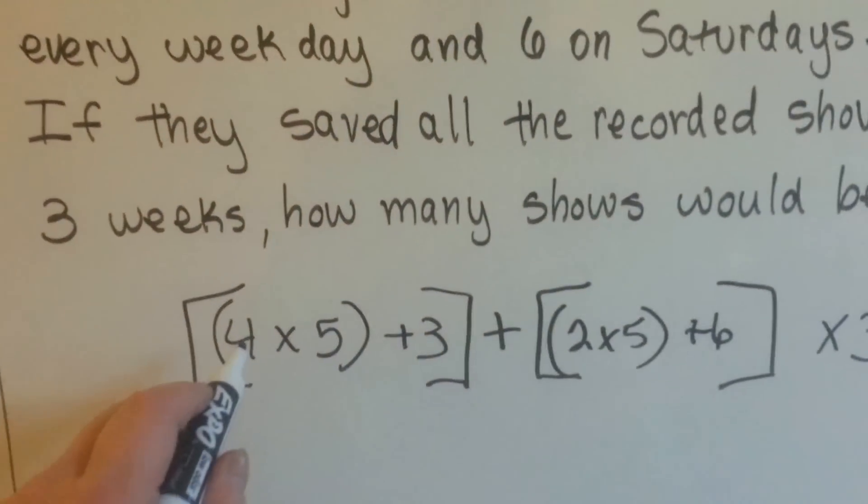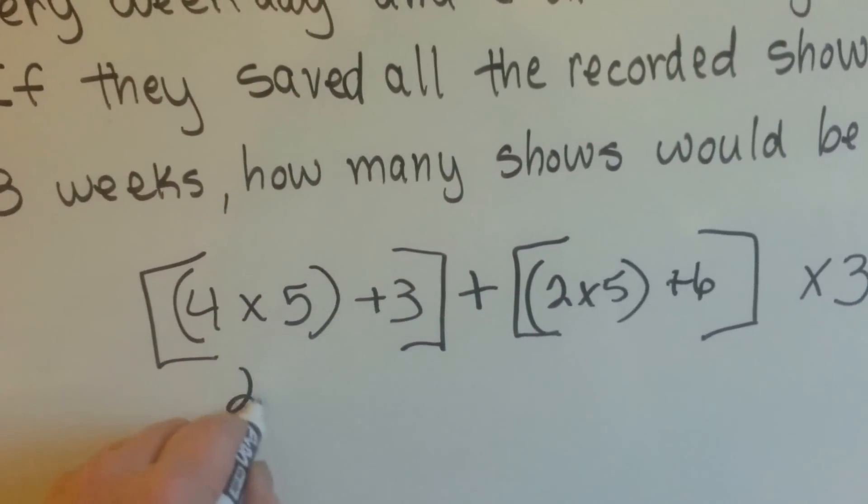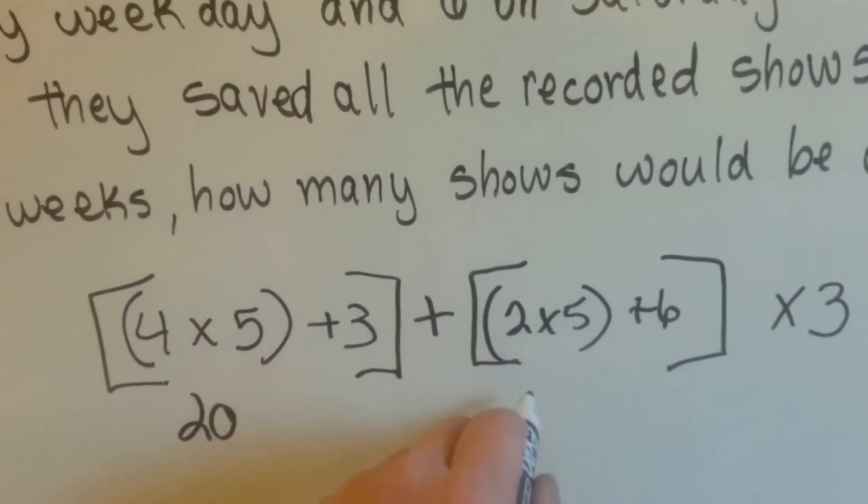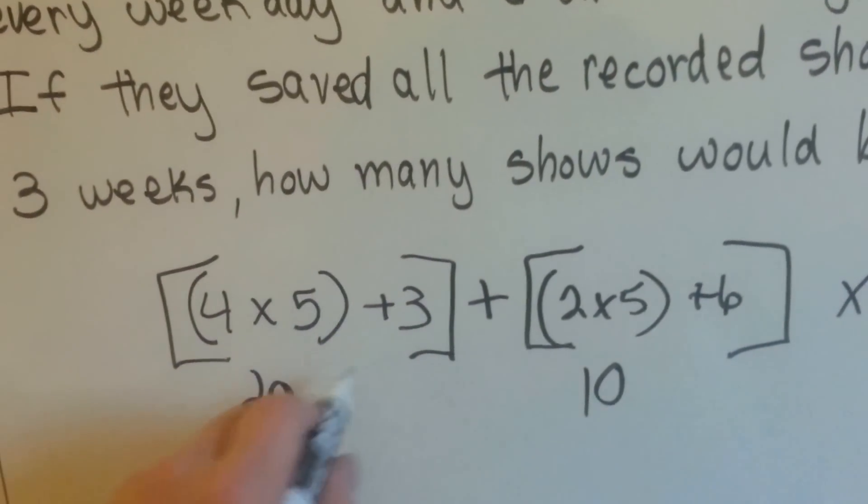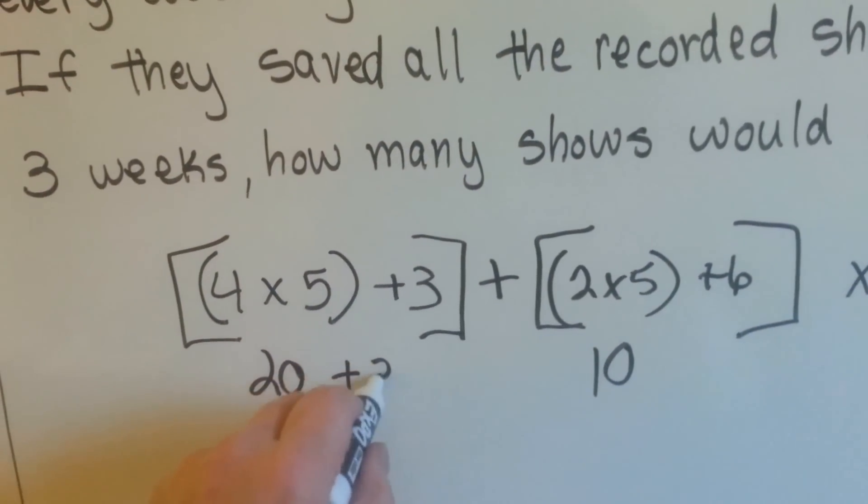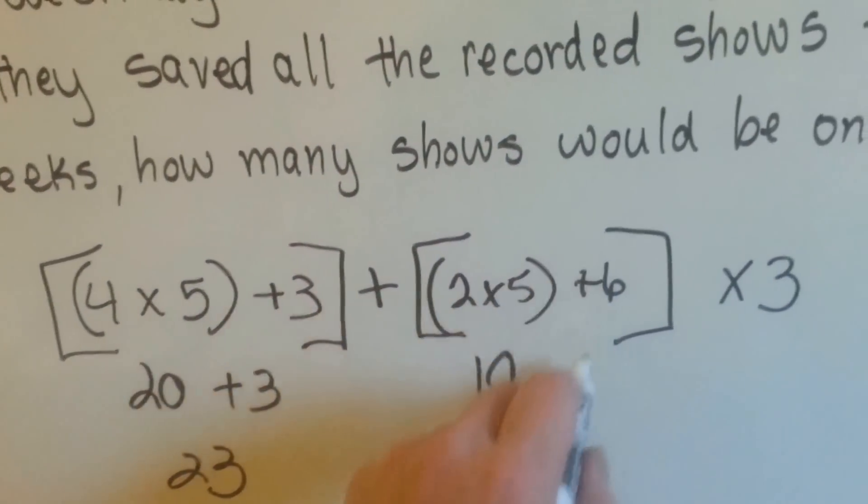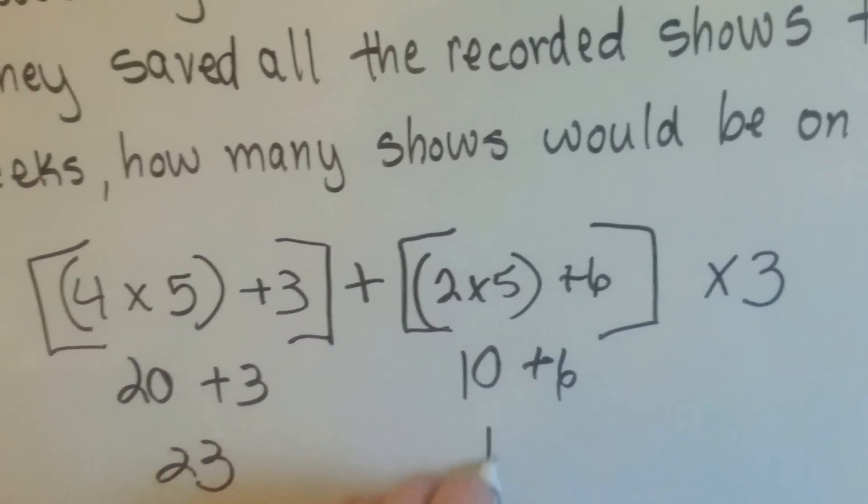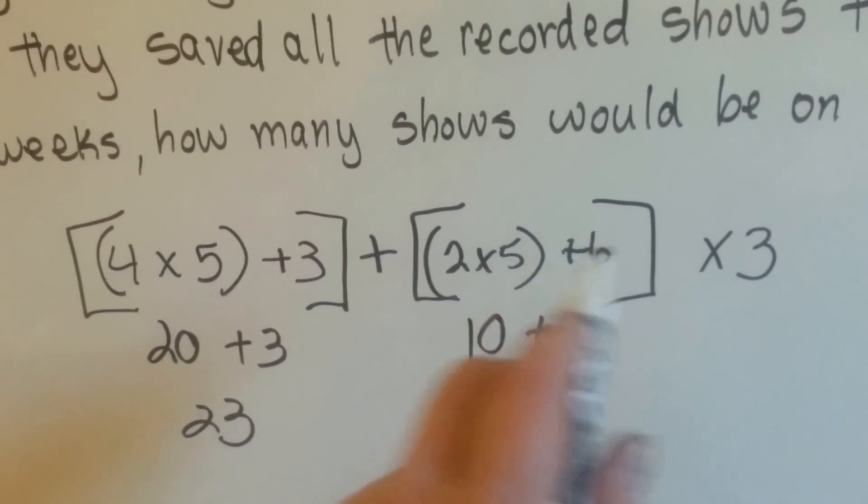4 times 5 is in the parentheses. We're going to do parentheses first. 4 times 5 is 20. 2 times 5 is 10. And now 20 plus 3 is 23. And 10 plus 6 is 16. So now we did everything that was in the parentheses and the brackets.